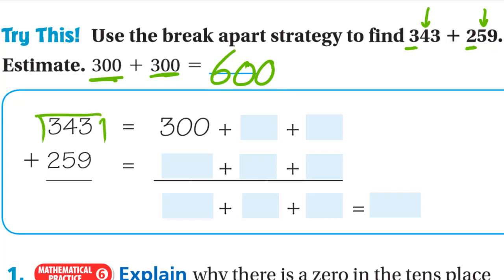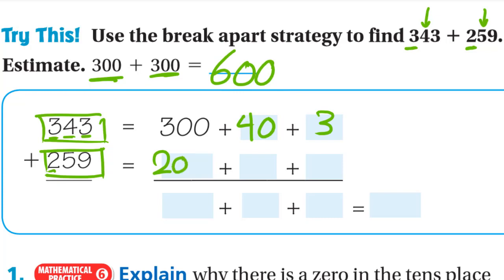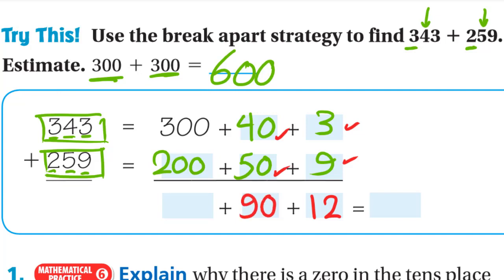Break apart 343: the 3 at hundreds is 300, the 4 at tens is 40, and the 3 at ones is 3. Break apart 259: the 2 at hundreds is 200, the 5 at tens is 50, and the 9 at ones is 9. Now add: 3 plus 9 is 12; 40 plus 50 is 90; and 300 plus 200 is 500.